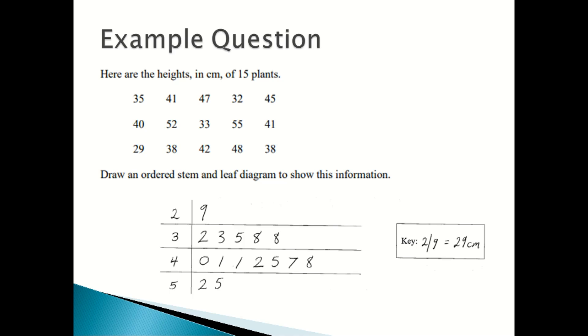So this is how your stem and leaf diagram would look like after putting all the information. So here we have 29 as 29, we have 32, 33, 35, 38, and 38.